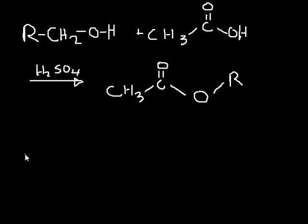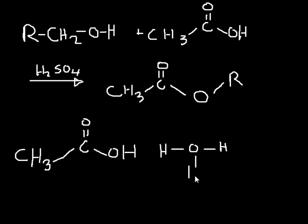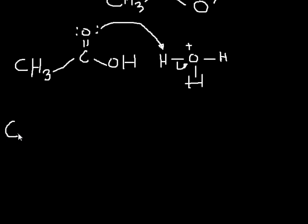First what happens is your acetic acid is actually protonated at the carbonyl by your stronger acid. So we have some H2SO4 that made some hydronium ion, and what's going to happen is that is going to protonate and you're going to get some water. So now we have this as our first intermediate, and the positive charge is conserved and it's on here now.